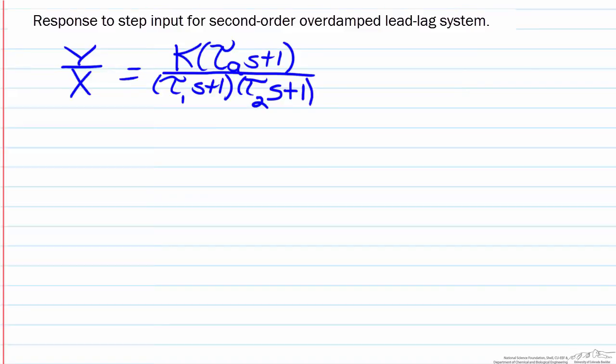In this screencast we will take a look at inverse responses. Inverse responses can come from systems which are second or higher order systems which have a lead-lag element to them and are overdamped. So in our analysis we'll focus solely on second order overdamped systems.